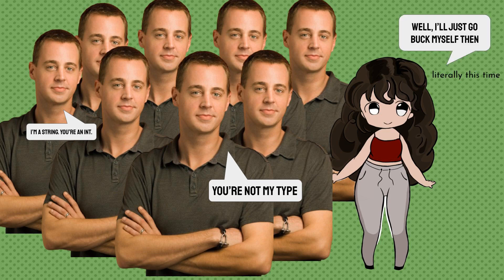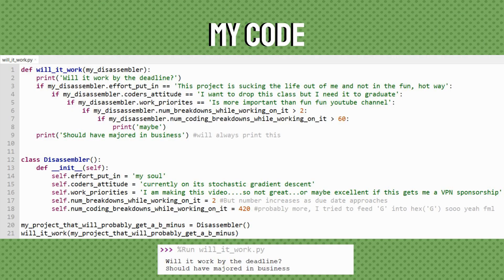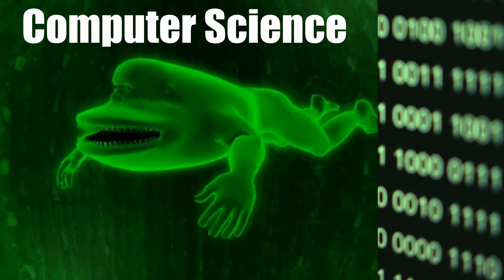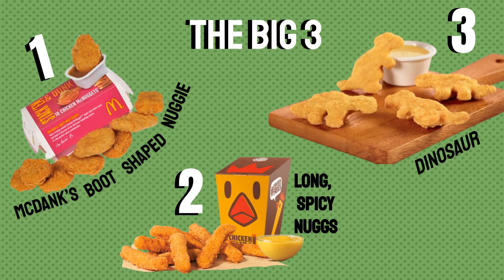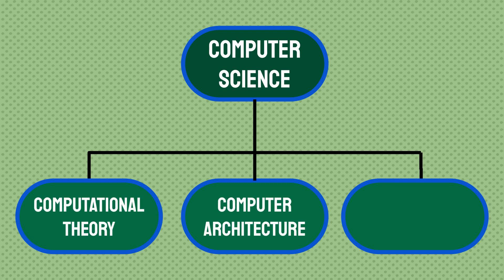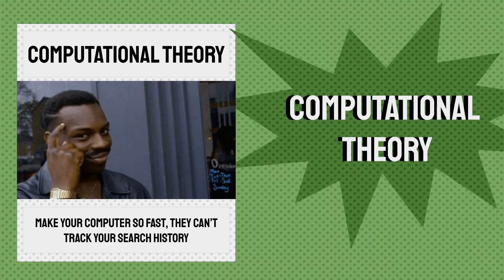But they never do. Out of things that break down, we have catabolic reactions, my code, many of our mental states during Panera Bread, and the topic of computer science. We'll be focusing on the big three subgroups: computational theory, computer architecture, and how to make robots do the things we want them to and still get funding.